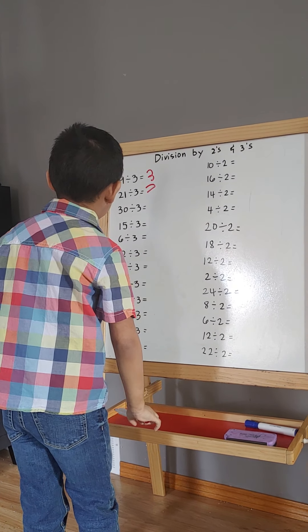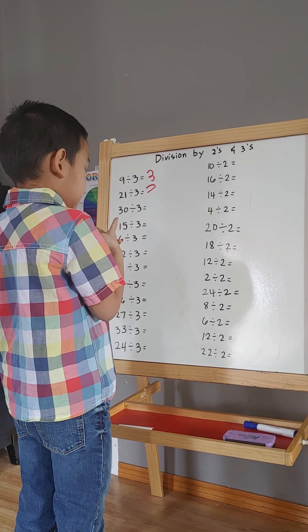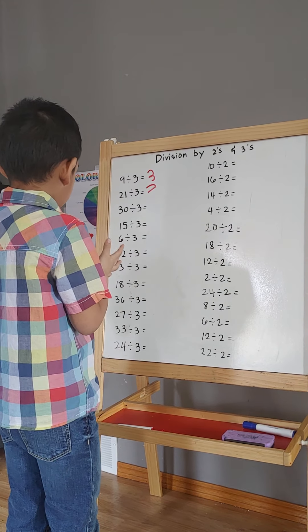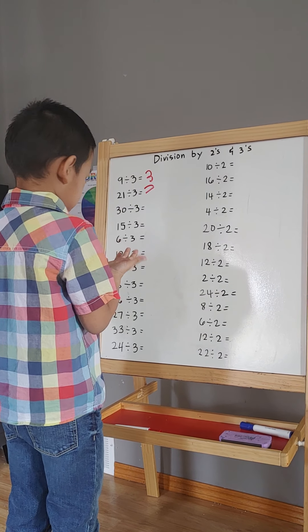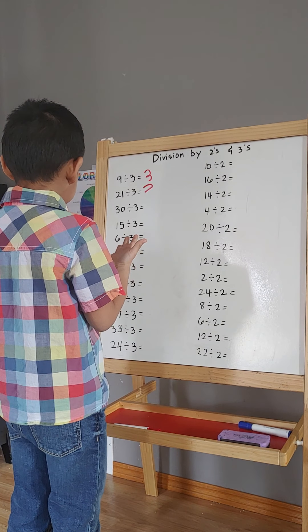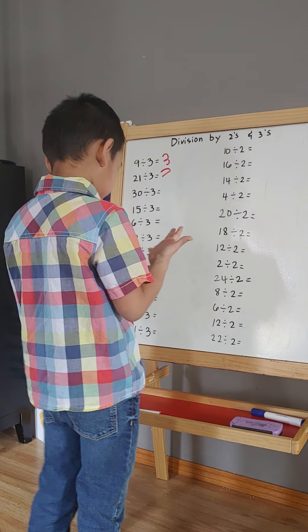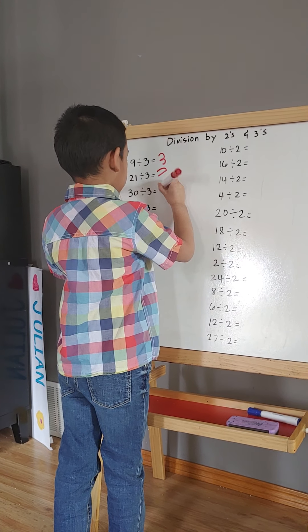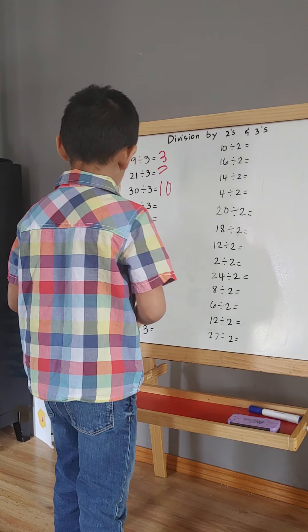3, 6, 9, 12, 15, 18, 21, 27. I mean... 3, 6, 9, 12, 15, 18, 21, 24, 27. You can't properly go, yeah. No. Not too fast.